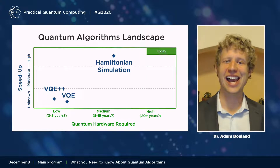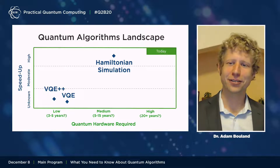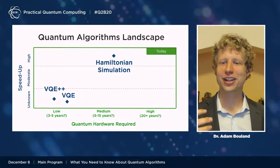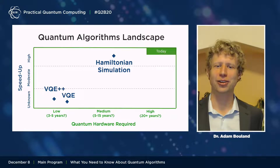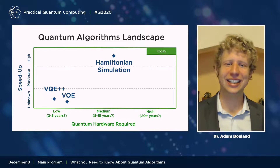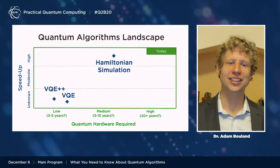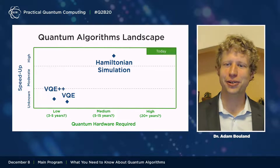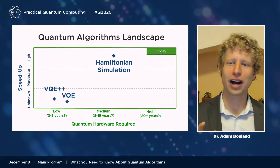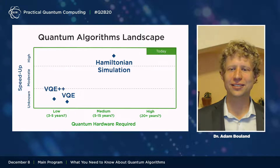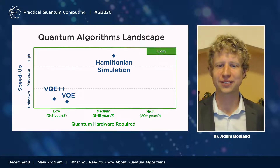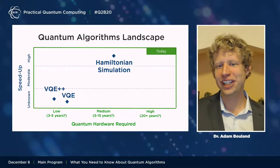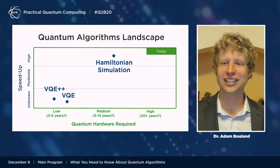Fast forwarding to today, some things have changed. Hamiltonian simulation algorithms have become more efficient — there's been substantial work minimizing the resources required — though it still remains relatively far away in terms of implementation. On the other hand, there have been a number of developments in VQE, referred to as VQE++, to decrease hardware requirements both in terms of fitting larger chemical problems onto smaller physical quantum computers and reducing the number of measurements needed. These have shifted VQE to the left in hardware requirements, but it remains a heuristic algorithm.